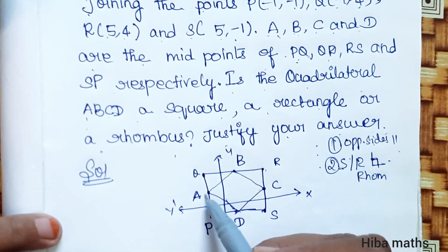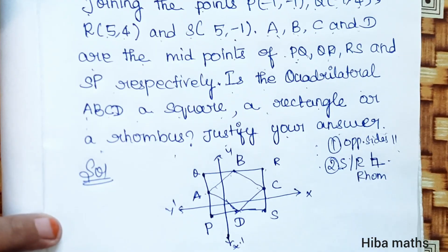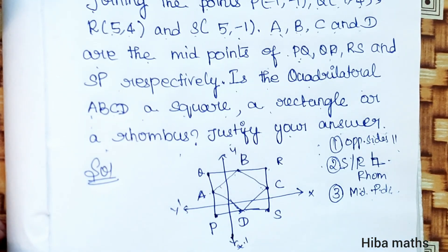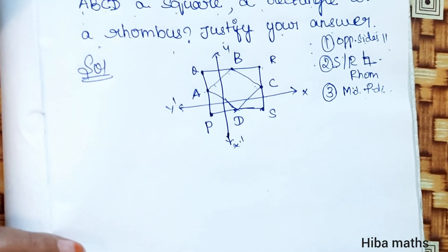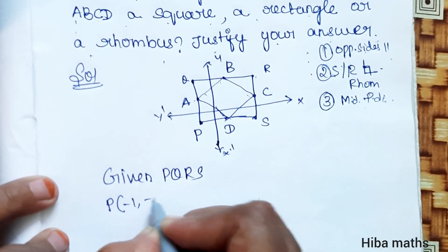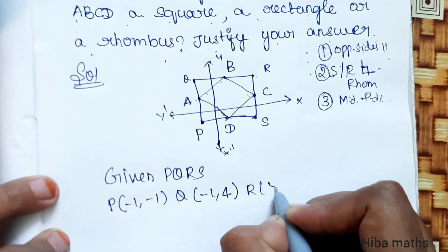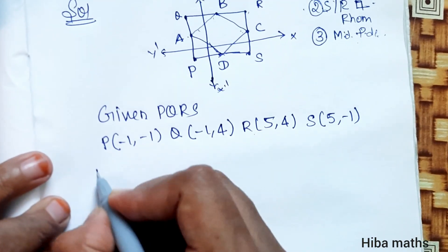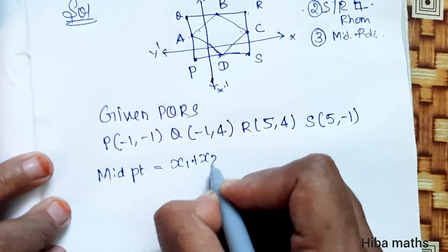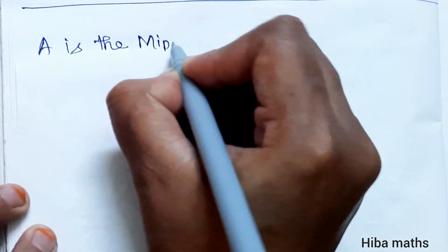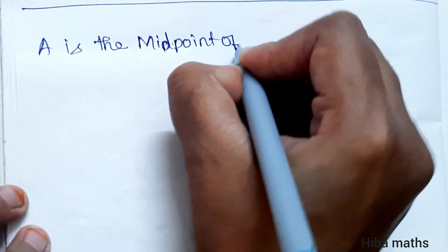This is a rhombus. This is square and rectangle. For AB, the angle is 90 degrees. The midpoints of the diagonals are the same — this is the third condition. In the solution, ABCD are the points. Given PQRS: P(-1, -1), Q(-1, 4), R(5, 4), S(5, -1). The midpoint formula is x1 plus x2 by 2, y1 plus y2 by 2. A is the midpoint of PQ.